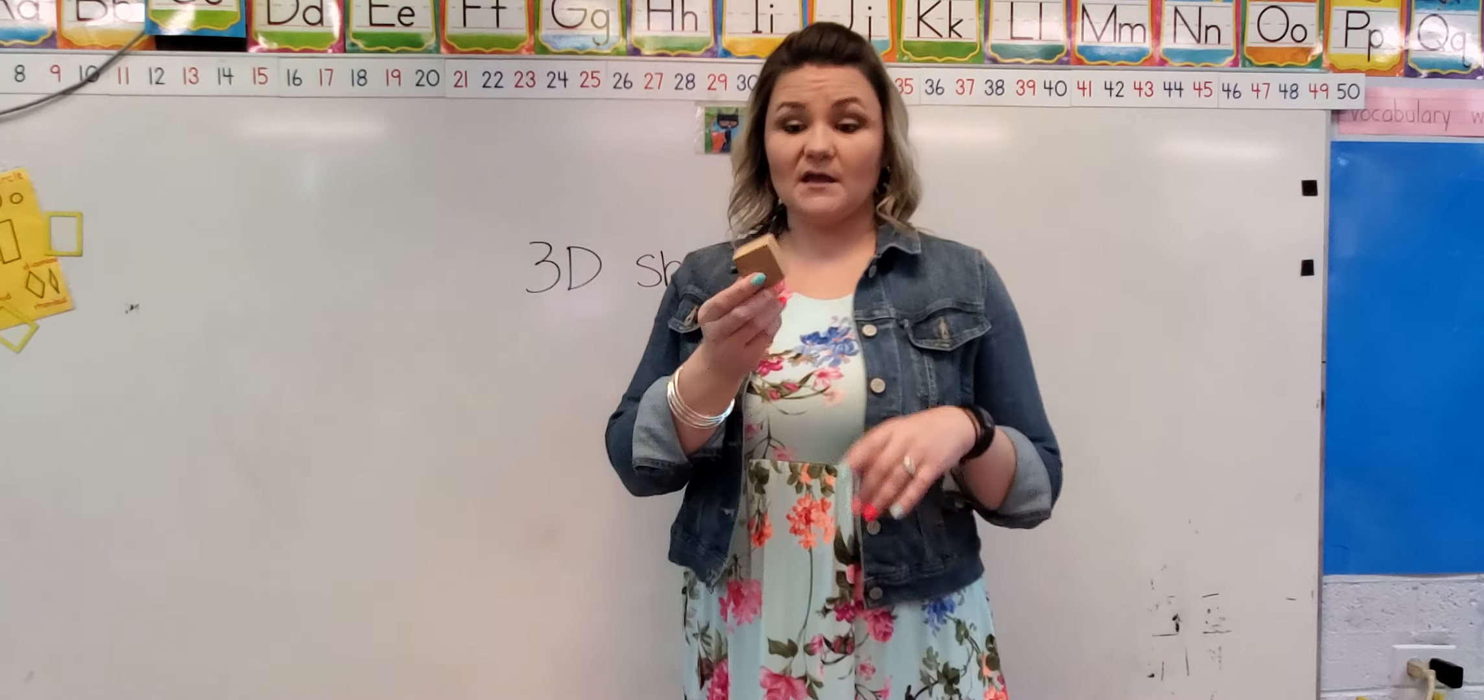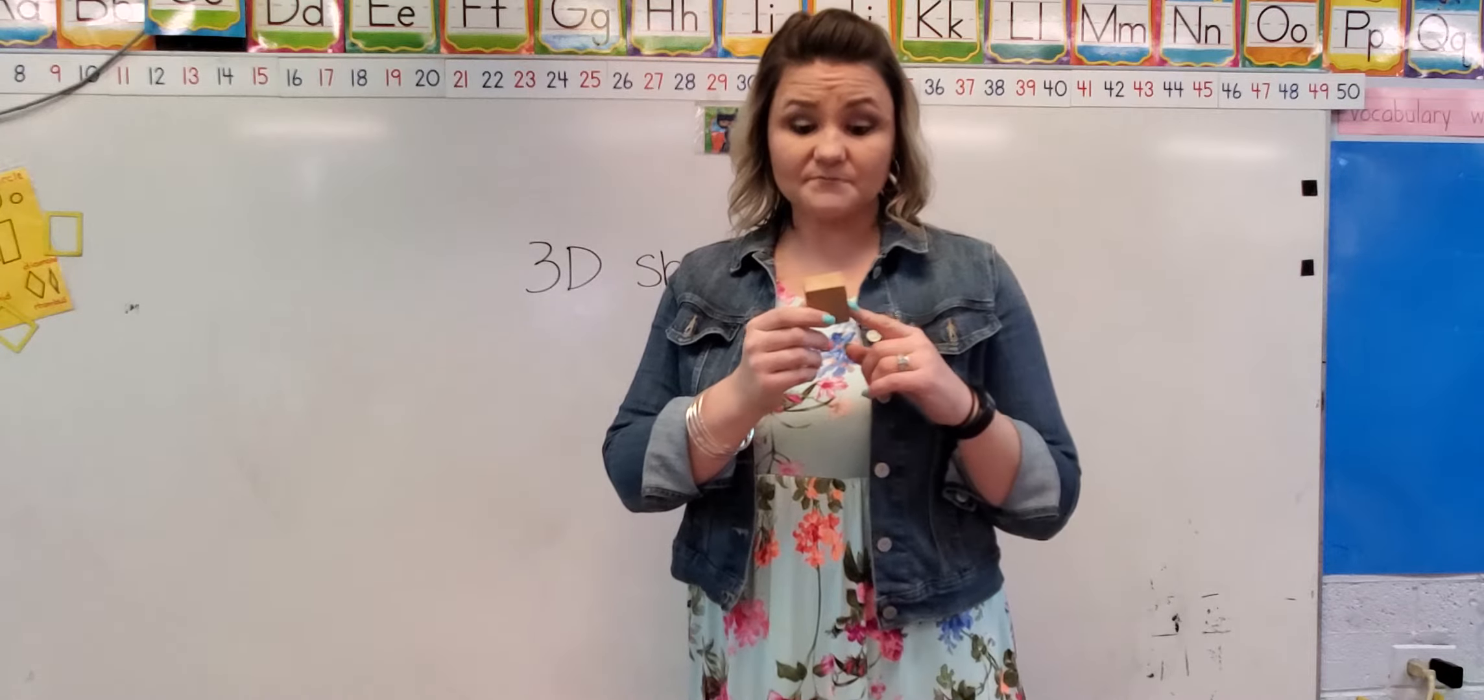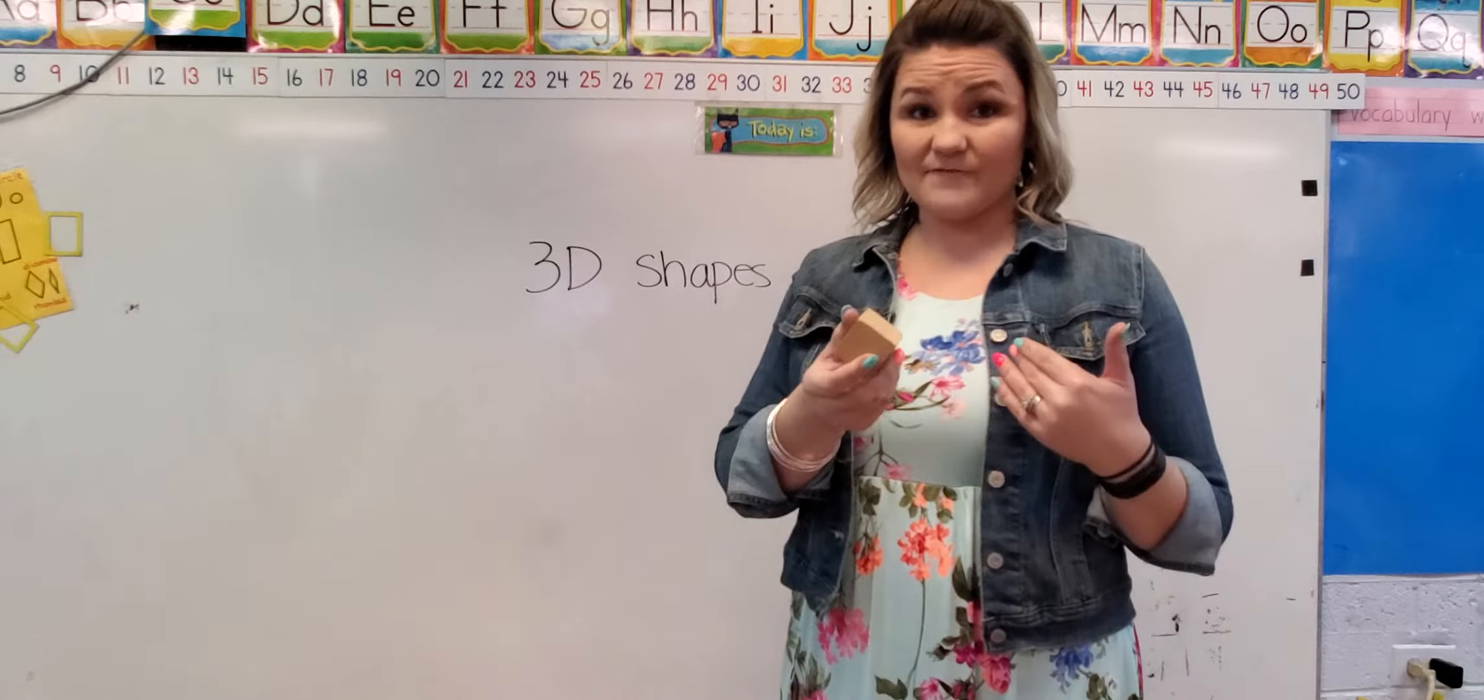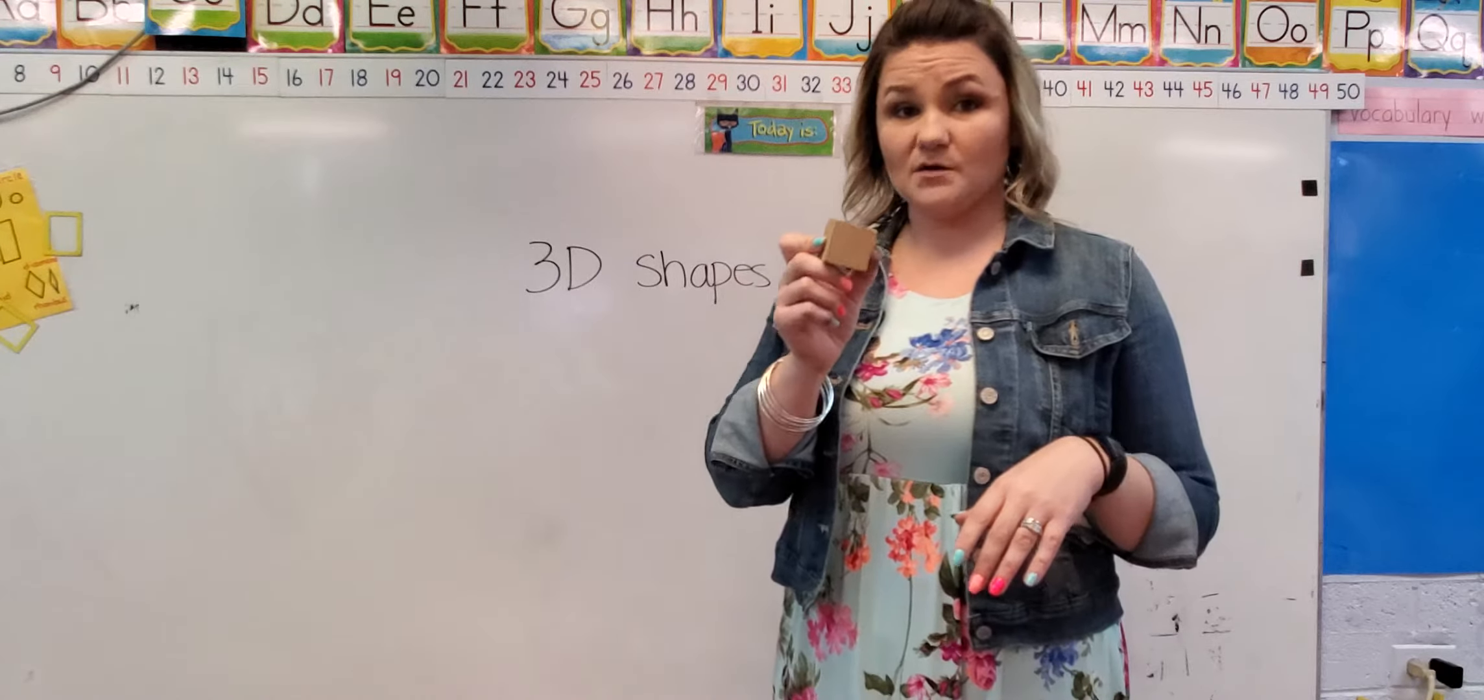So on a cube, again, it's got six flat faces and they're all squares. So those are the main attributes that you're going to be asking for when you're talking about a cube with your child.